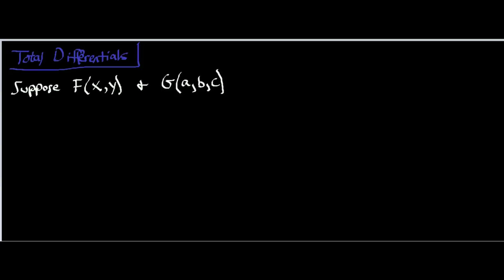When we look at a normal derivative — let me do this over here on the right — suppose we have a function, little f, and suppose f is a function of time. In physics, you're very used to seeing this. So I have a function f, it's a function of one variable, and that's time — a univariable function. If I wanted to take the derivative of this function with respect to time, that's an infinitesimally small change in the function with respect to time. You simply write this as df/dt.